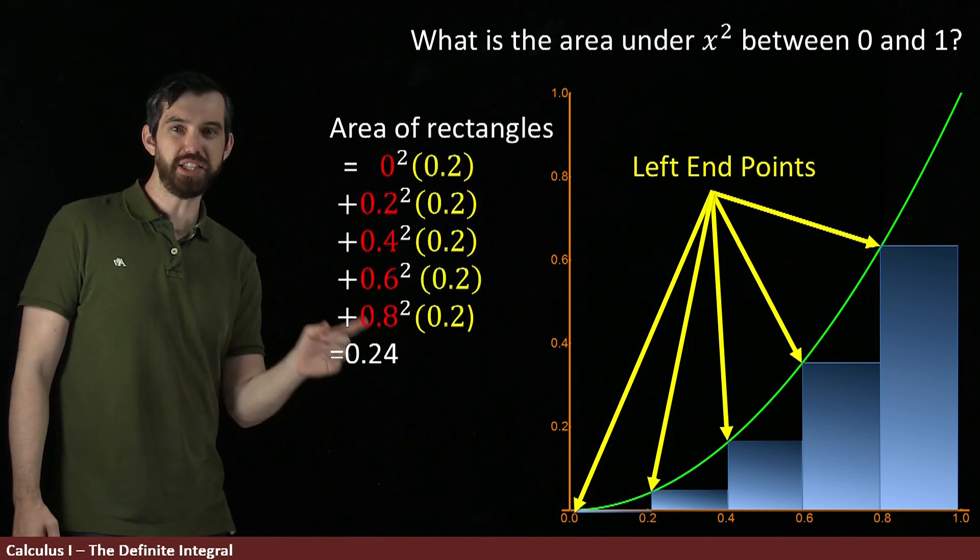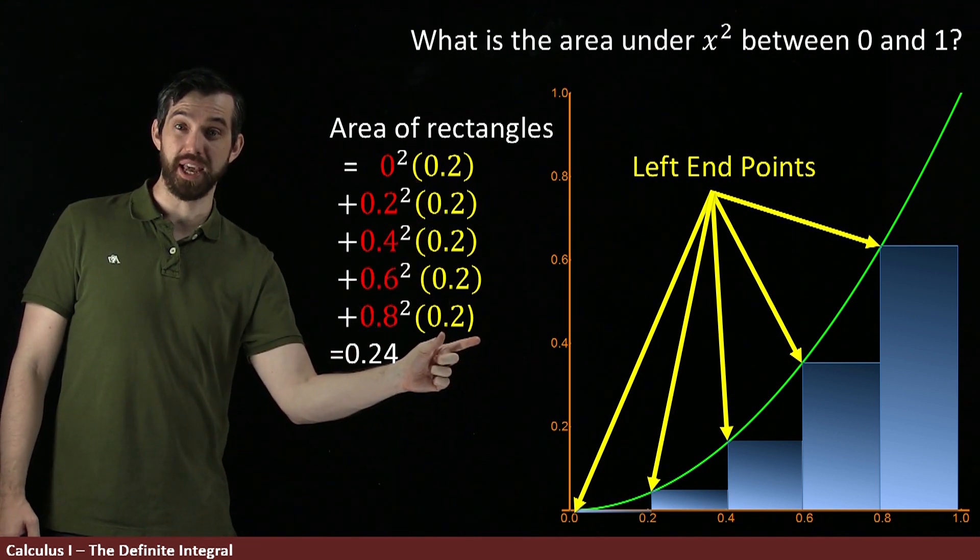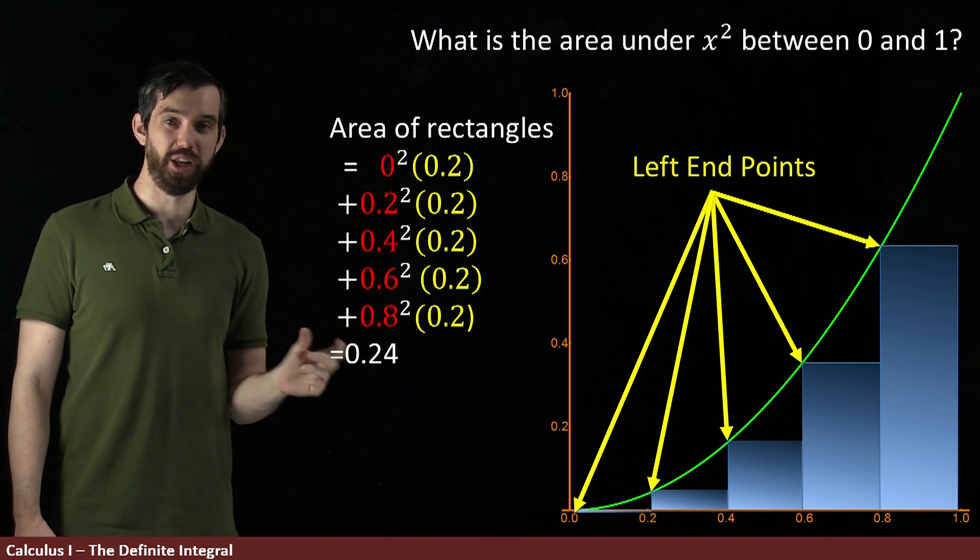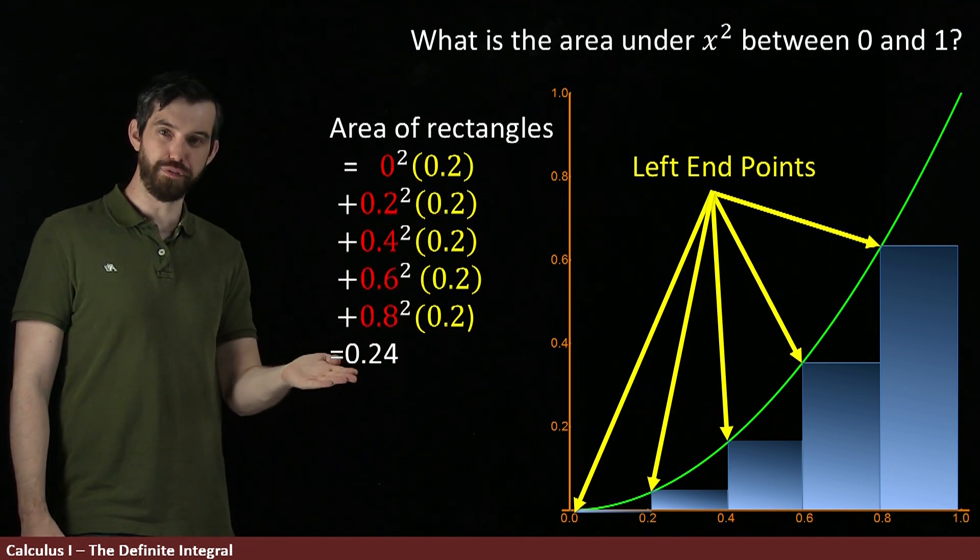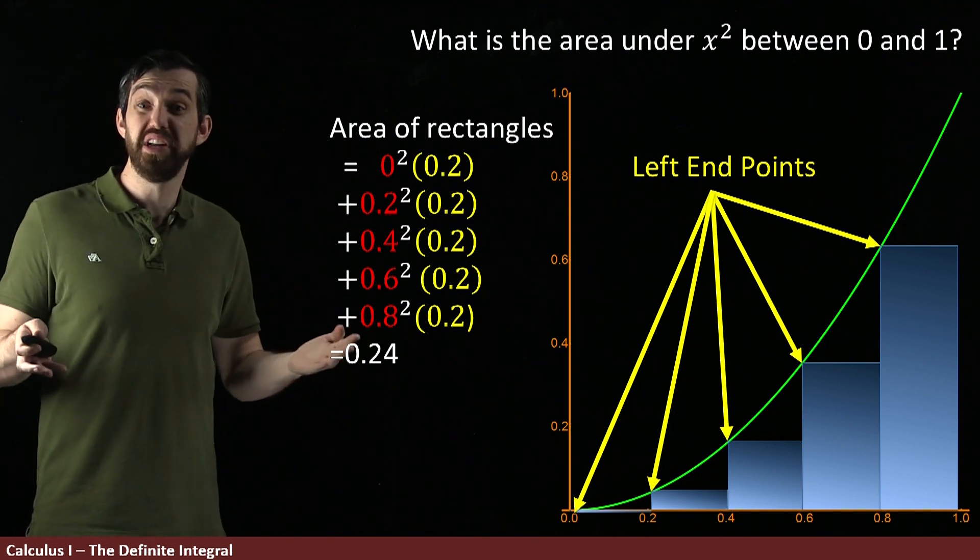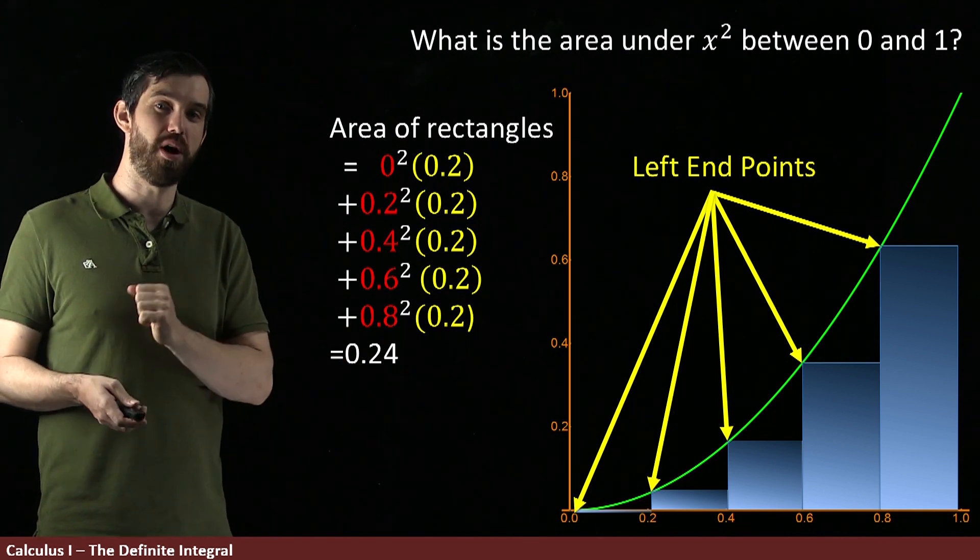And this time the area of them is going to be a little bit too small. And I again can go and figure out what that computation is—it's just the 0.2 stayed the same, but my heights have all changed a little bit. And now I've gotten the value of 0.24, which was a good ways underneath the 0.44 that we saw before.